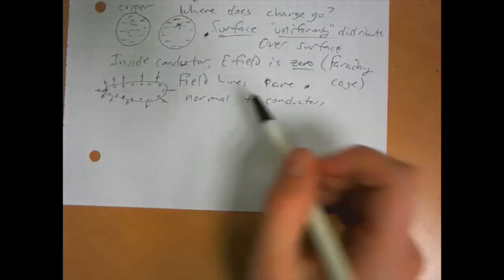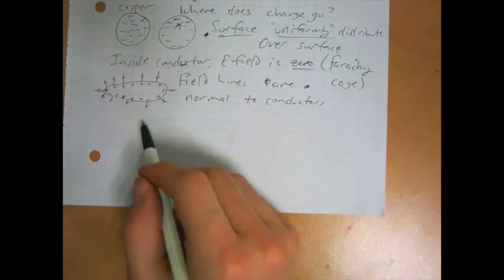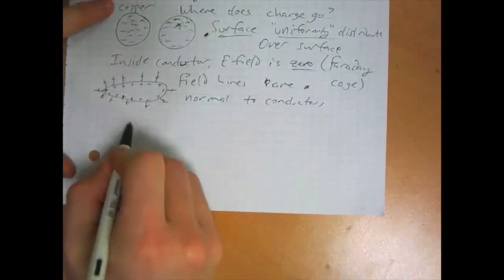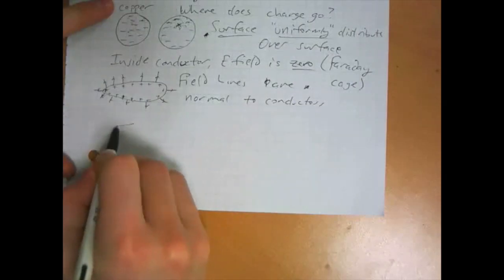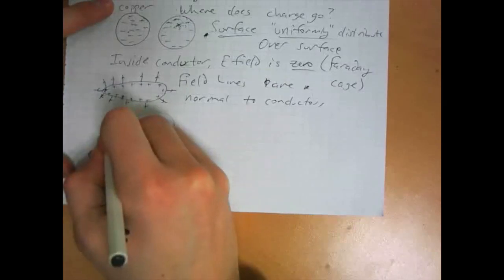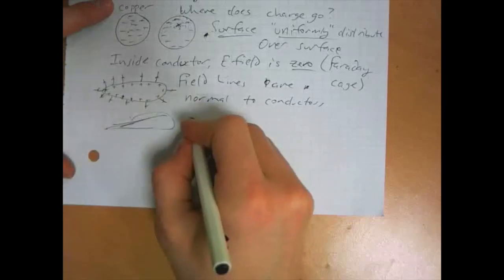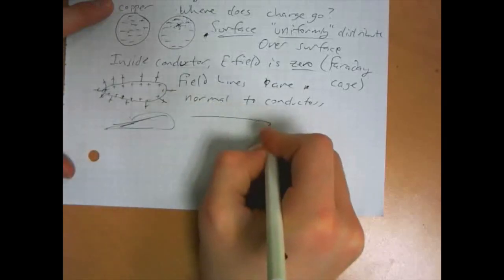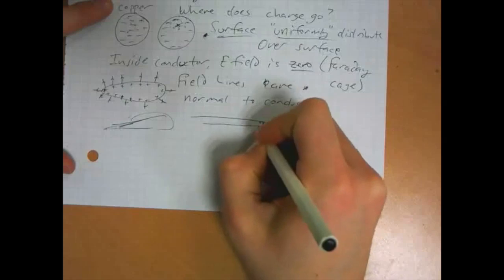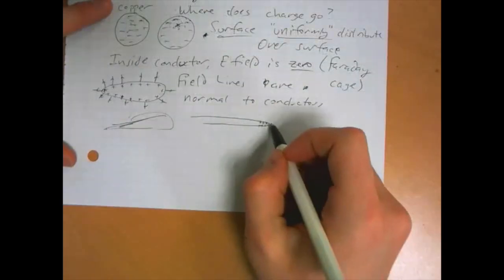So a particular consequence of this is that if you have a pointy area of a conductor, say you have a conductor shaped like this, the charges over here wind up being more densely packed.